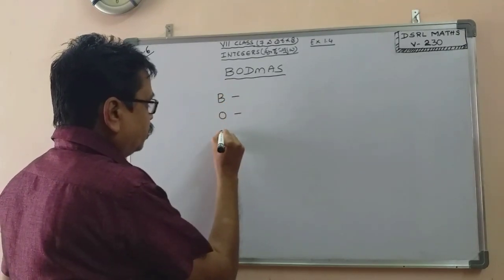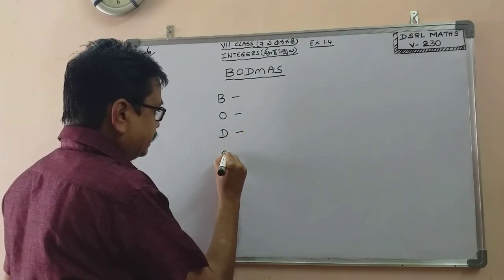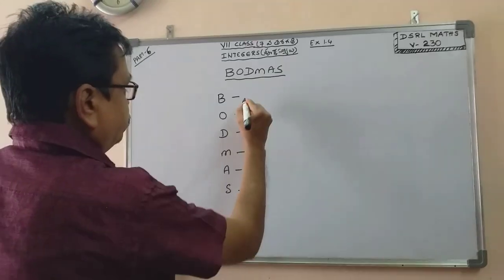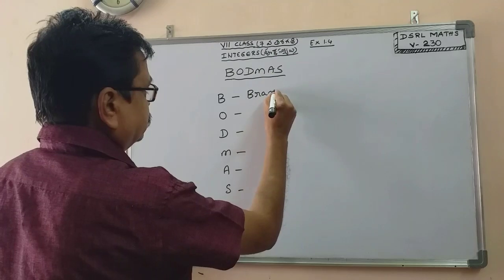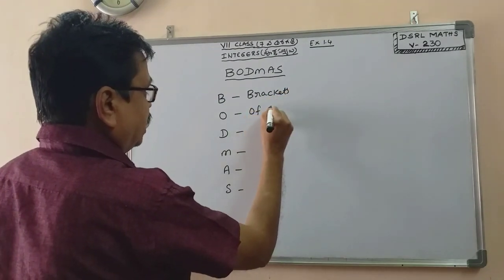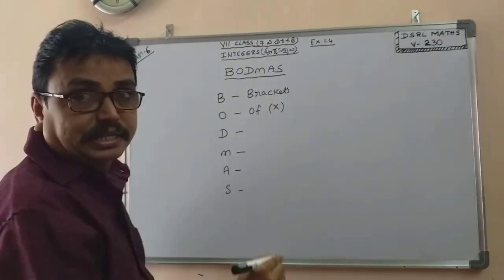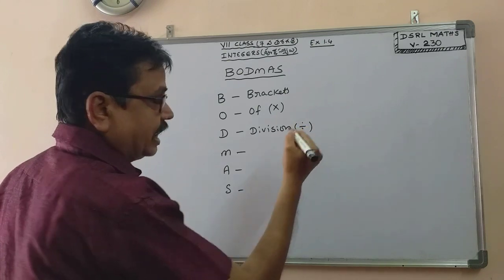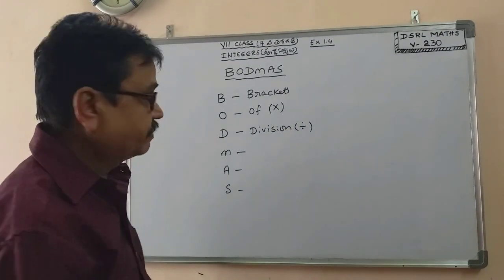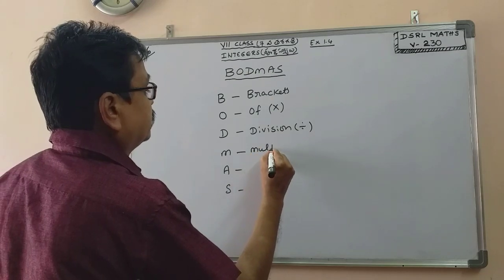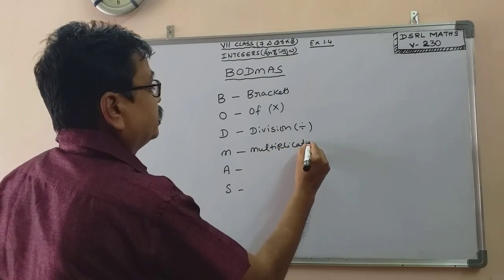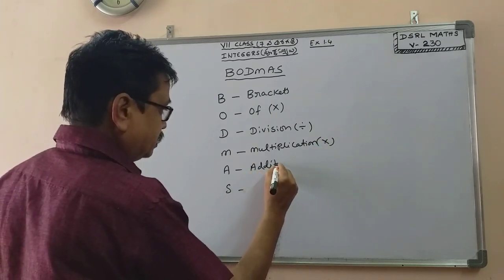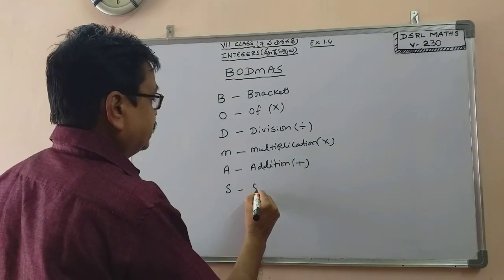BODMAS: B stands for Brackets, O stands for Of, D stands for Division, M stands for Multiplication, A stands for Addition, and S stands for Subtraction.